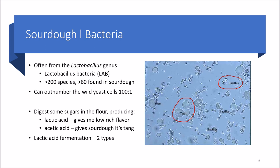Lactobacilli bacteria can digest some of the sugars in the flour — similar to how yeast digest sugars — and this produces lactic acid and acetic acid, which is what gives sourdough its sourness. Lactic acid gives the bread a mellow or rich flavor, while acetic acid gives that tang — the sour flavor. If you've ever consumed white vinegar, its main component is acetic acid, so if you smell or taste a sourness or vinegariness in sourdough, it's primarily because of that acetic acid.